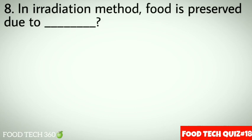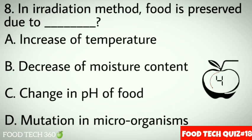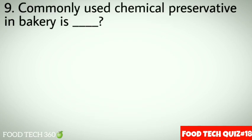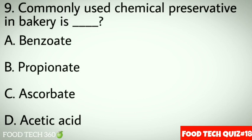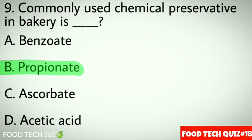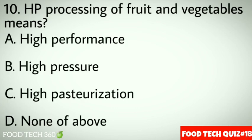Question 6: Commonly used refrigerant in household refrigerators. Options: A. Nitrogen, B. Freon, C. Carbon dioxide, D. NH3. Correct answer: B. Freon. Question 7: Fermentation involved in mango pickle production is dash. Options: A. Butyric acid, B. Lactic acid, C. Acetic acid, D. Alcoholic. Correct answer: B. Lactic acid. Question 8: In irradiation method, food is preserved due to dash. Options: A. Increase of temperature, B. Decrease of moisture content, C. Change in pH of food, D. Mutation in microorganisms. Correct answer: D. Mutation in microorganisms.